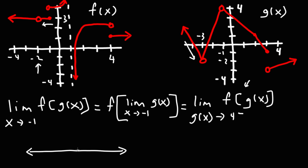Let's use the number line to verify this. We put 4, the y value we're approaching. To the right of positive 4 will be 4.1, and to the left will be 3.9. Notice that we're going up — the y value is 2, 2.5, 3.5, 3.9. So we're coming from the left. We're not going above 4 to 4.1; we go from 3 to 3.5 to 3.9 to 4. That's why we put the negative sign — we're approaching 4 from the left side, or from below it.